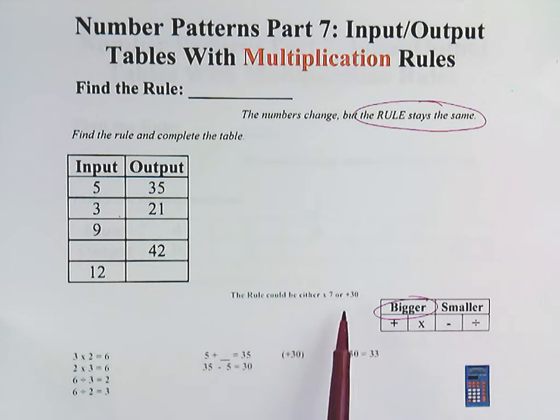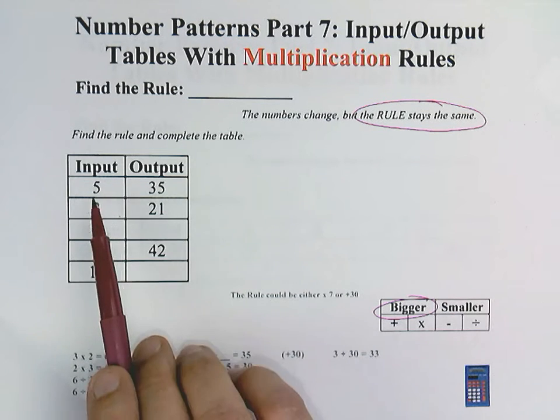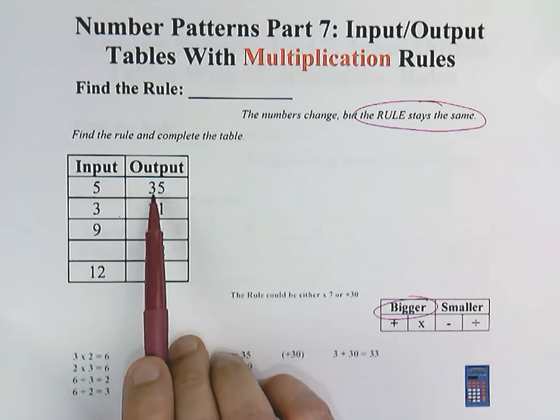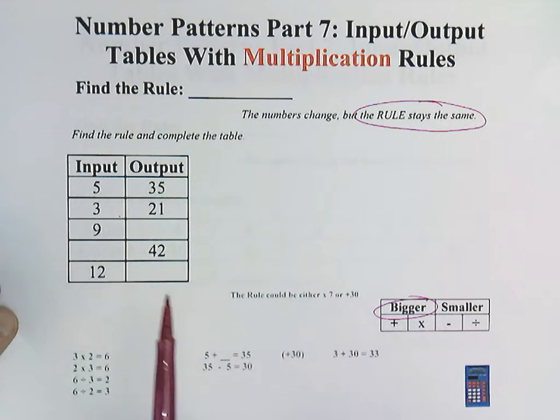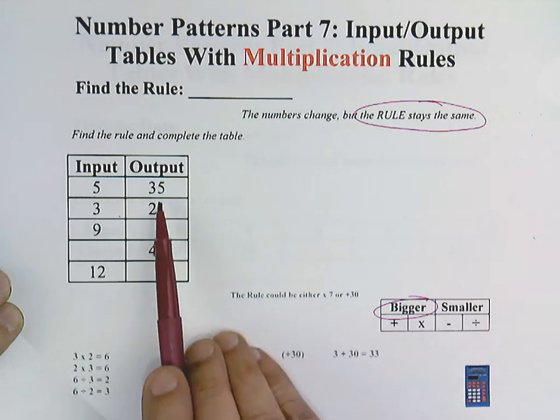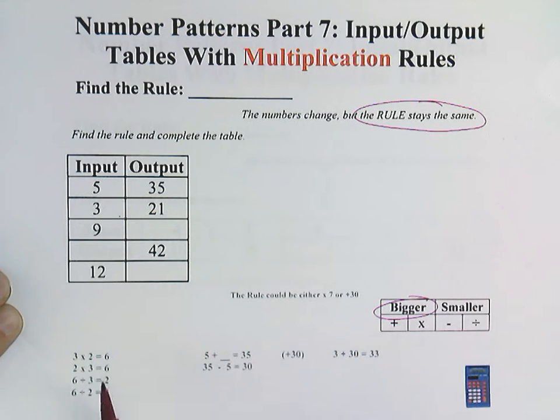Just to save time, I just wrote some notes here. It says the rule could either be a times 7. For example, 5 times 7 would equal 35. Or it could be a plus 30. And here's why. We have 5 plus blank equals 35. Because of fact families, we can interchangeably use these numbers. So instead of 5 plus blank equals 35, we could go 35 minus 5 equals 30. Meaning that it could be a plus 30 rule.